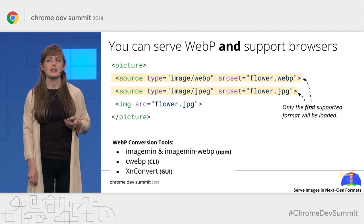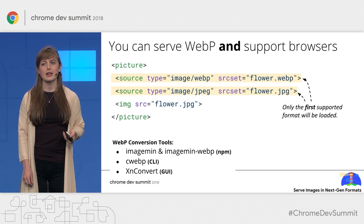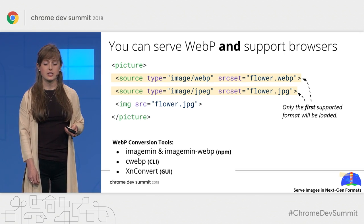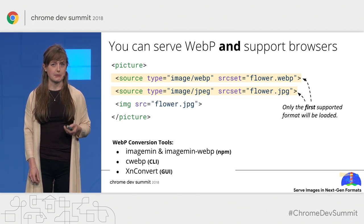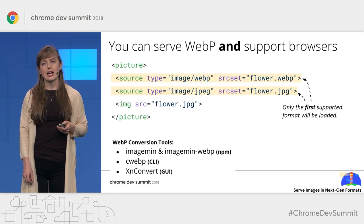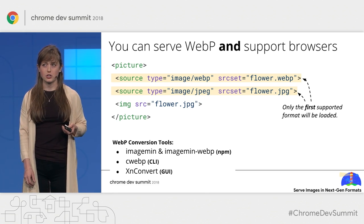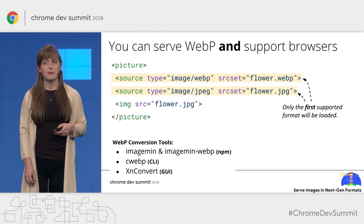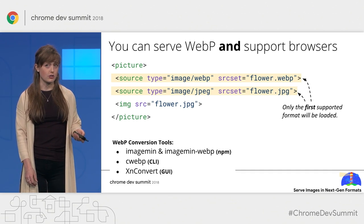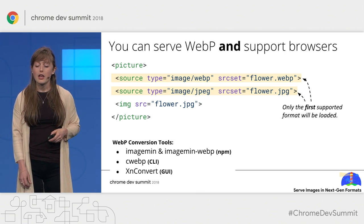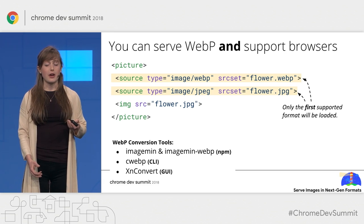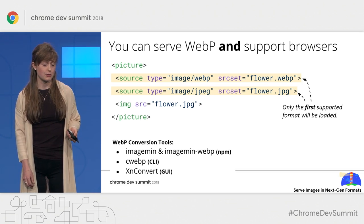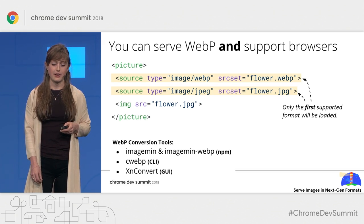By far the biggest hesitation around adopting WebP is a fear that you can't both serve WebP and support non-WebP browsers. This is not true. The picture and source tags make it possible to do precisely this. The source tag is used to specify multiple image formats of the same image, and the browser will download only the first image that is in a format it supports. In this example, a Chrome browser would download the WebP version, while a Safari browser would download the JPEG version. All major browsers have supported picture and source tags since 2015, and even older browsers will still work by downloading the image specified by the image tag.